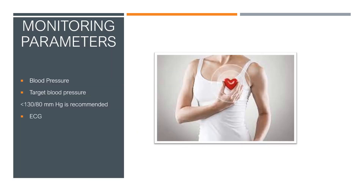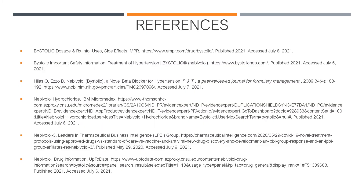Monitoring parameters for Bystolic: blood pressure should be monitored regularly, with a target blood pressure of less than 130 over 80 recommended. The ECG should also be monitored. Thank you for listening to my presentation.